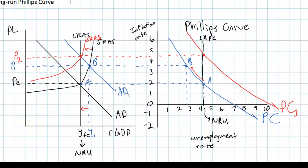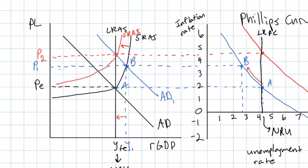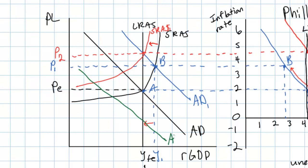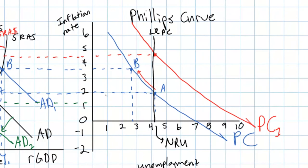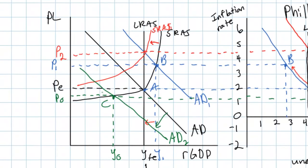Now let's look at what happens if aggregate demand falls. If there's a demand-deficient recession and consumption and investment decline, AD shifts to the left. The decrease in aggregate demand puts downward pressure on prices — the price level falls from PE to P0 — and there is a fall in output and employment from YFE to Y0. On our short-run Phillips curve diagram this corresponds with a movement down and to the right from point A to point C, with lower inflation and higher unemployment — unemployment rises to over five percent and inflation falls to around one percent.